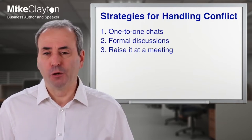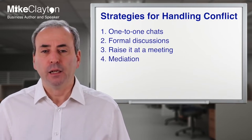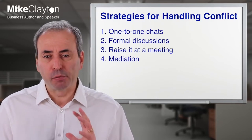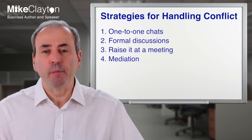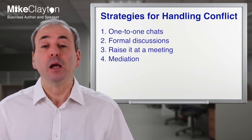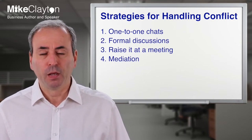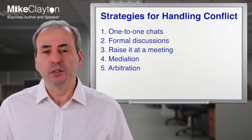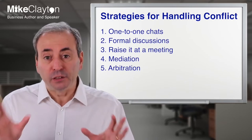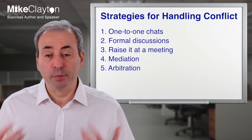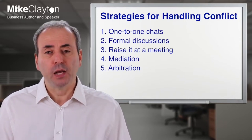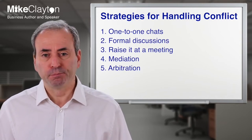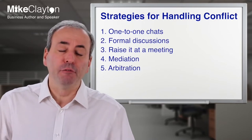The fourth approach is mediation — finding somebody who can mediate between the two parties, bring them together, and make sure each is being properly heard and their positions properly listened to and interpreted. Related to mediation, the fifth is arbitration: again using a third party, but this time they listen to both sides and then make a rational judgment and impose a solution upon the two parties.